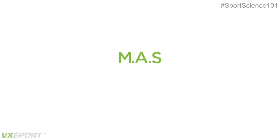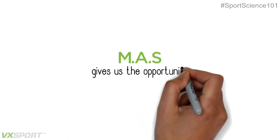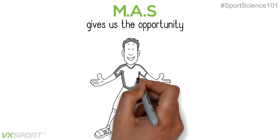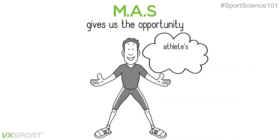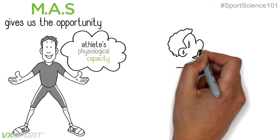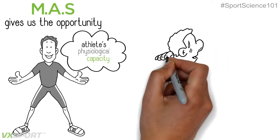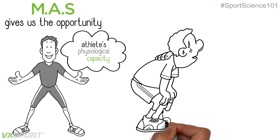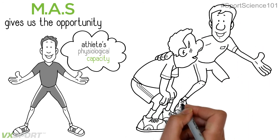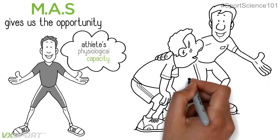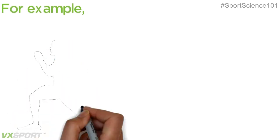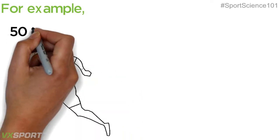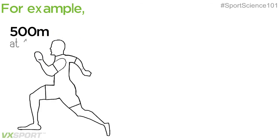MAS gives us the opportunity to view metrics that are directly relative to an athlete's physiological capacity. By using each athlete's specific MAS, it becomes easy to set meaningful goals for your whole team. For example, you could set 500 meters at 100% of each athlete's MAS.